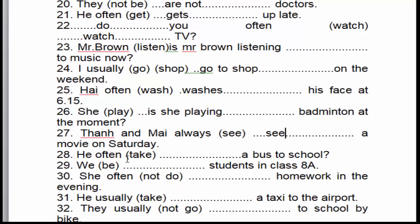Câu số 28: 'Does he often take the bus to school?' Anh ấy thường đón xe buýt đi học đúng không? 'Often' là dấu hiệu nhận biết của thì hiện tại đơn. 'He' là chủ ngữ số ít, cho nên chúng ta sử dụng trợ động từ 'does' trong câu hỏi, động từ để nguyên mẫu.